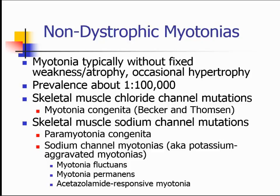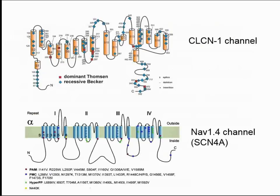Sodium channel mutations in the Nav1.4 channel gene, or SCN4A, cause — depending upon the mutation — either potassium aggravated myotonia, paramyotonia congenita, or even hyperkalemic periodic paralysis. Hyperkalemic periodic paralysis is characterized primarily by paralysis, though some of these patients do get myotonic discharges and myotonia. This is just a cartoon of the chloride channel one gene showing all the known missense mutations accounting for the dominant Thompson form and the recessive Becker form.